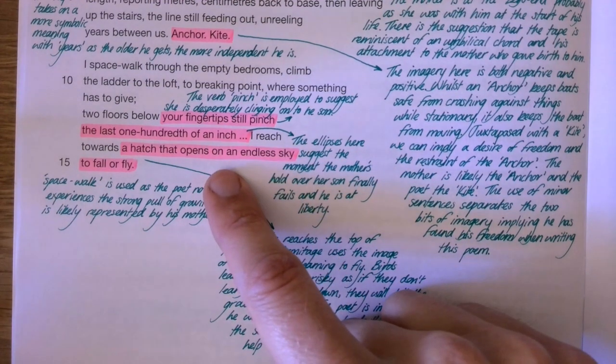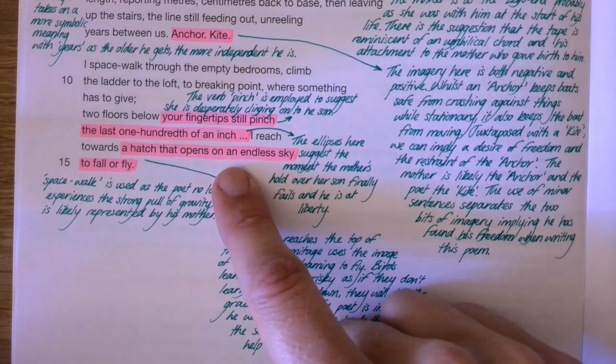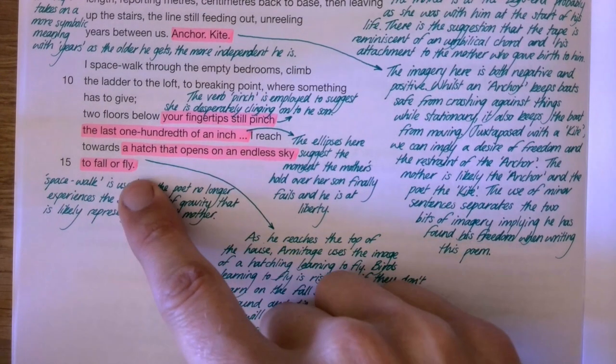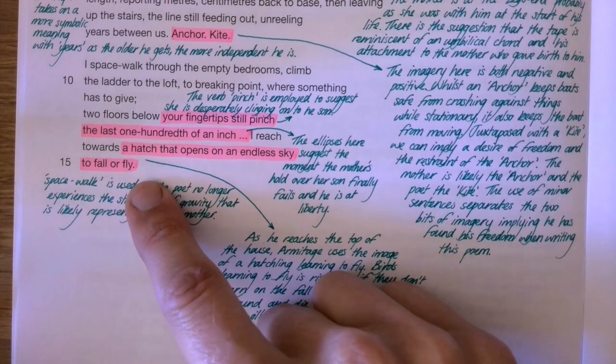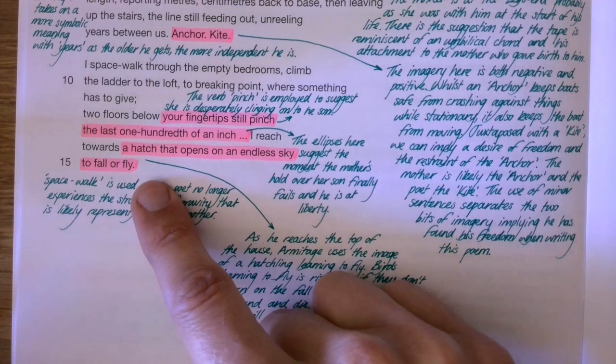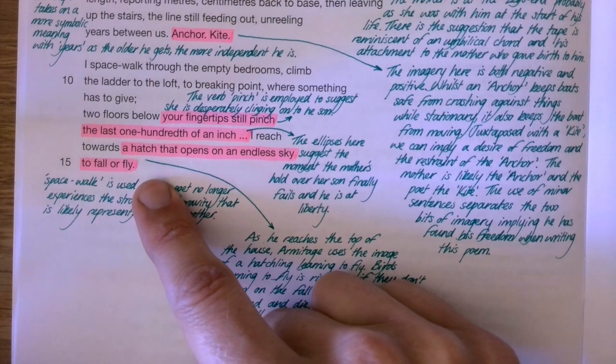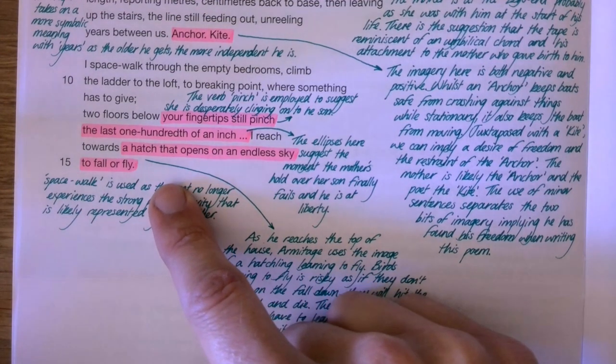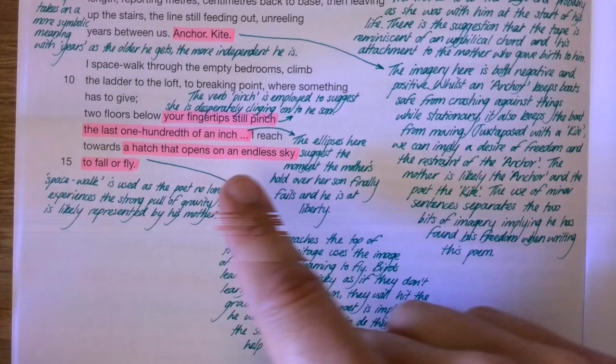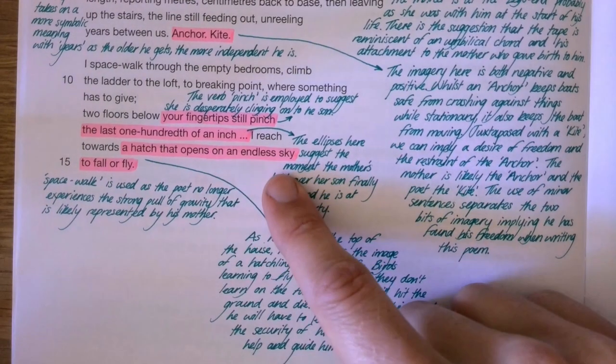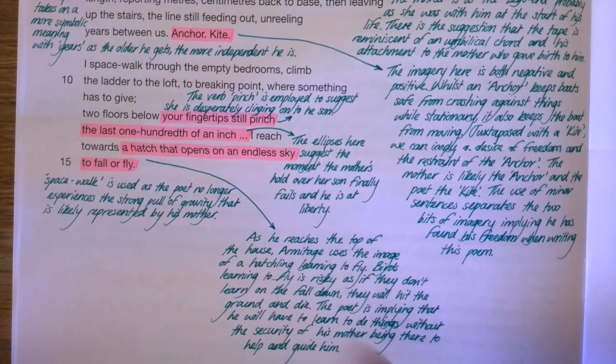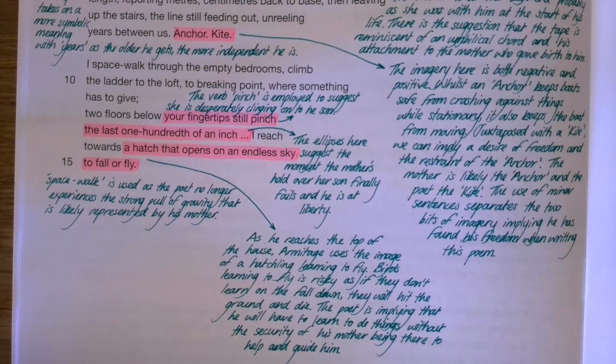He goes on to say: I reach towards a hatch that opens on an endless sky to fall or fly. And you've got a really nice bit of imagery here. A hatch and to fall or fly kind of refers to hatchlings. So young birds, when they finally learn to fly, they basically get pushed out of the nest and they have to learn to fly on the way down when they're falling. So it's a risk. And he's willing to take that risk to find his independence from his mother.